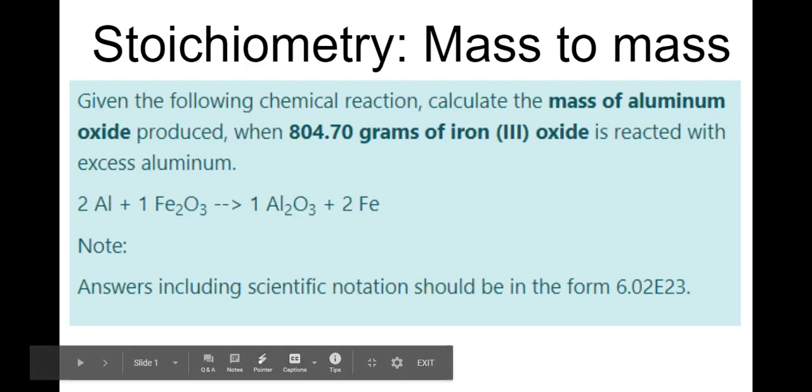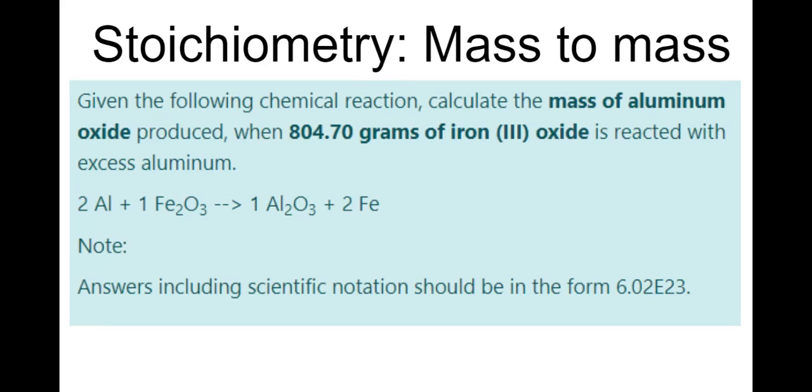Howdy, students. I thought I would share an example of how to solve a stoichiometry problem, specifically one of the toughest kind when you have to go from mass to mass. It could be mass to volume, mass to particles, but it's the same basic concept, and it's the most complicated type of stoichiometry problem that we're going to end up doing.